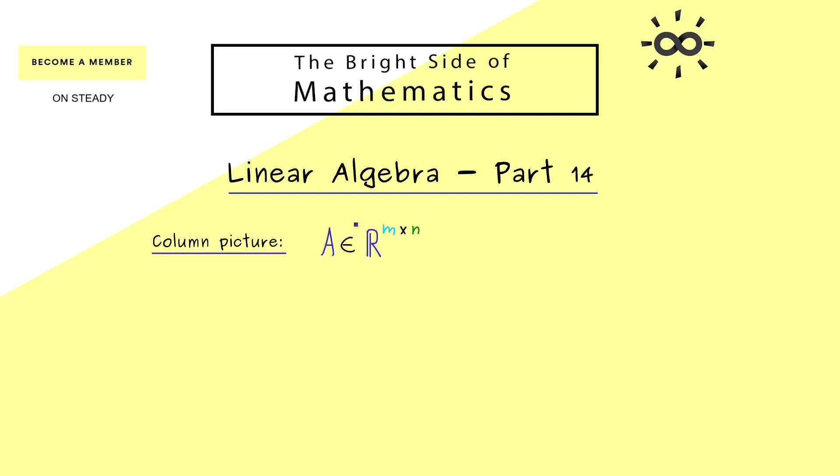In order to understand this, let's take a matrix A again, that consists of m rows and n columns. In other words, we have a table with m times n numbers in it.